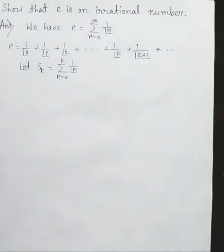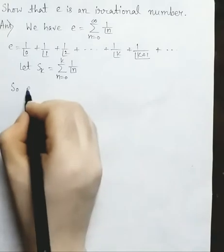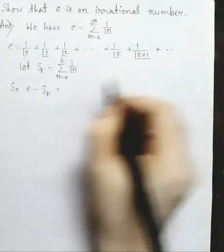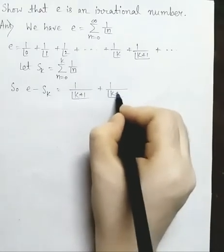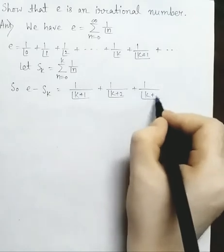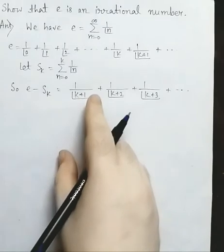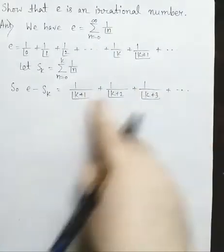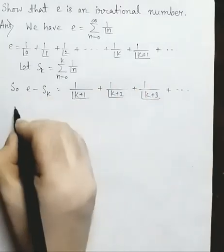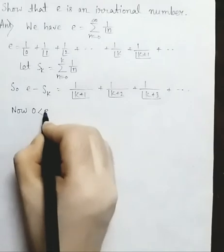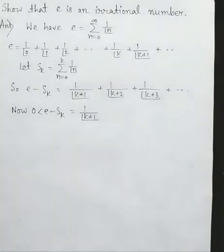So clearly e minus S_k will be the remaining portion, that means 1 by factorial of k plus 1 plus 1 by factorial of k plus 2 plus 1 by factorial of k plus 3 plus dot dot. Now factorial of a number is positive, so each term here is positive, and their sum is also positive. So e minus S_k is positive. Therefore 0 is less than e minus S_k, which equals 1 by factorial of k plus 1 plus dot dot.